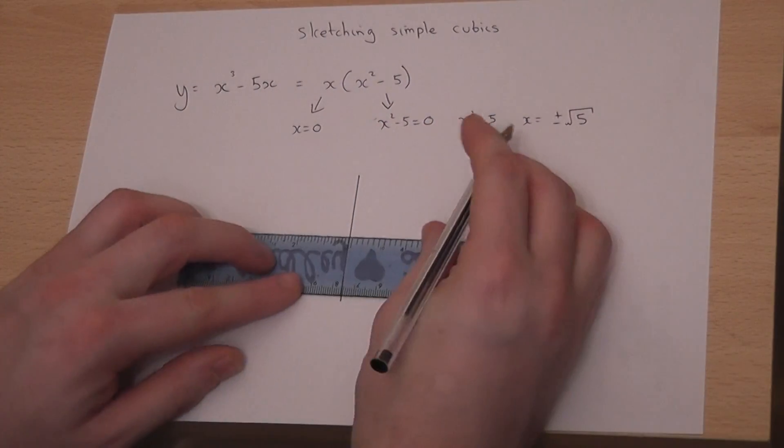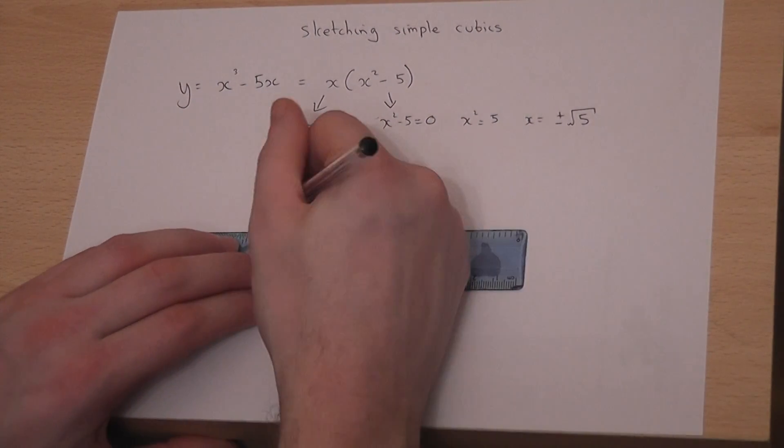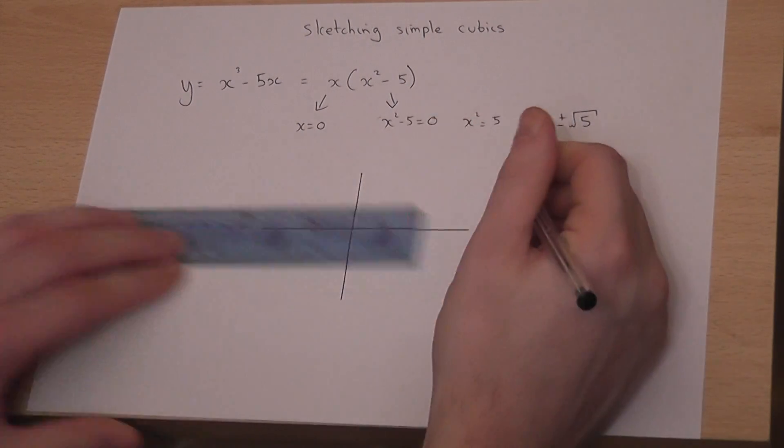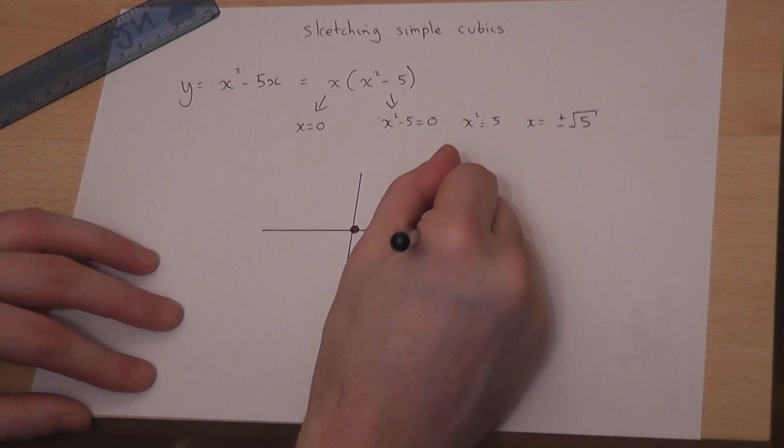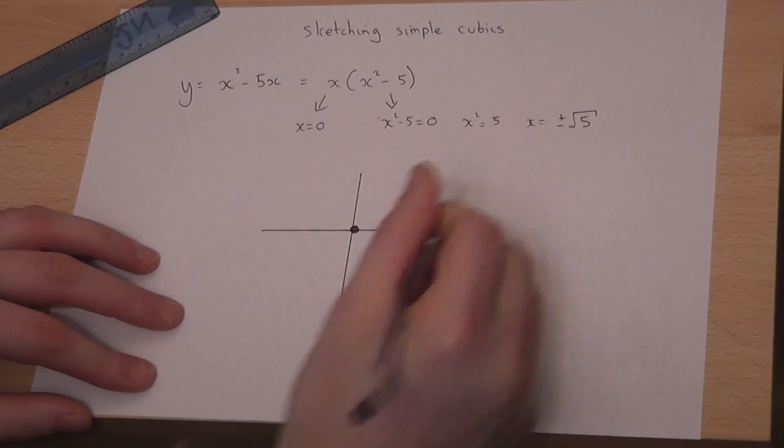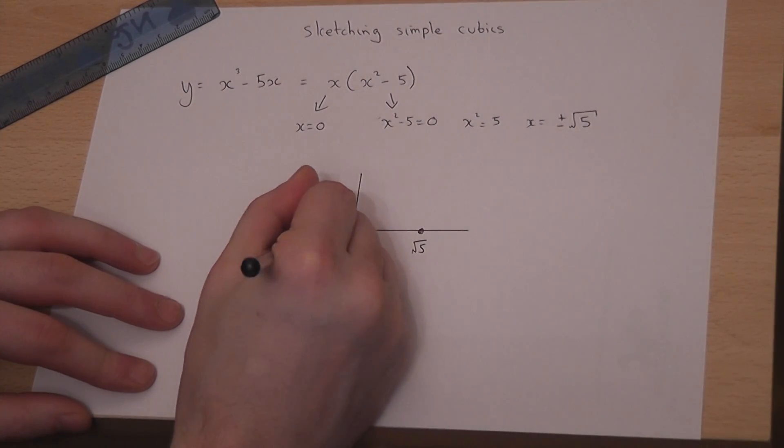the sketch is not to scale, then basically what I get is the graph cutting at 0, at plus root 5, and at minus root 5.